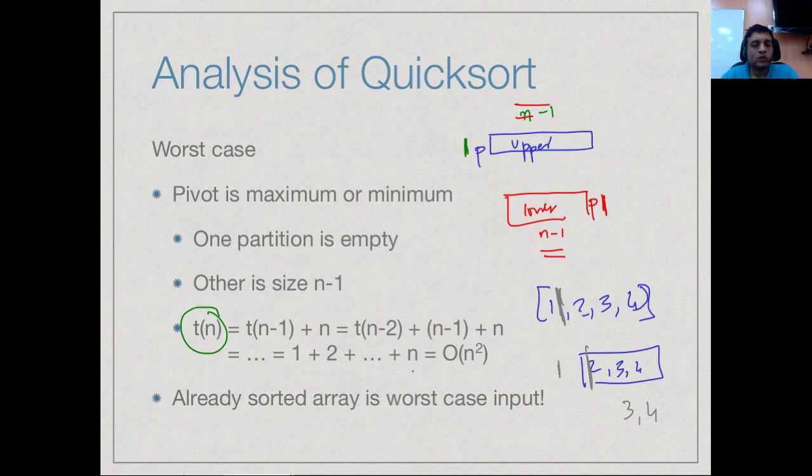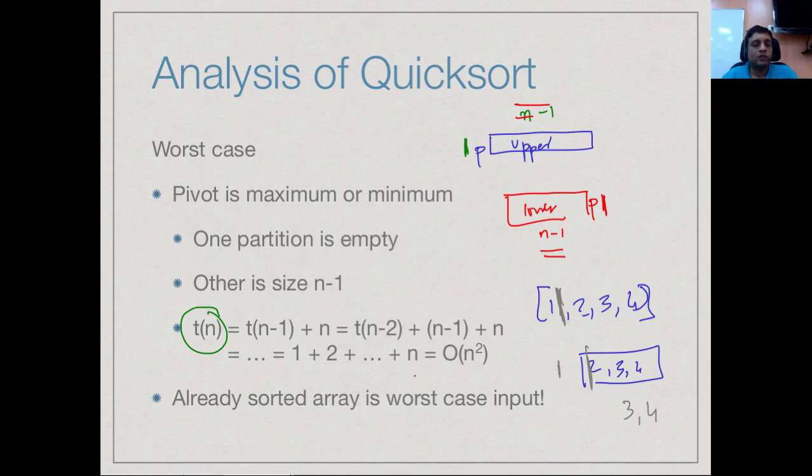This becomes order n square. The worst case of quicksort is actually order n square, which is the same as the worst case for selection sort and insertion sort. So why do we bother with this much more complicated algorithm quicksort when we already know several intuitive algorithms which are order n square?